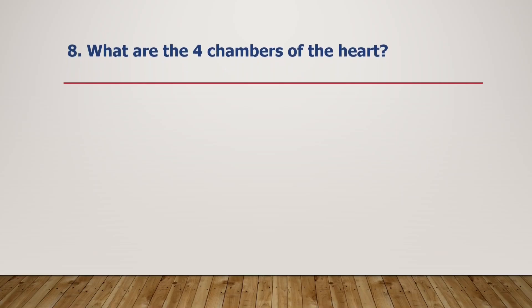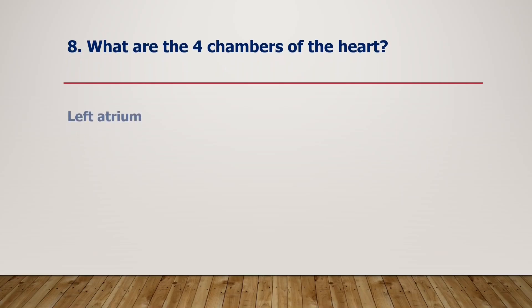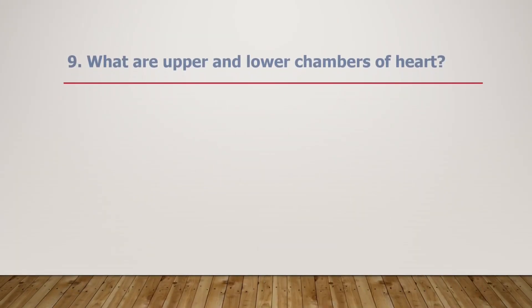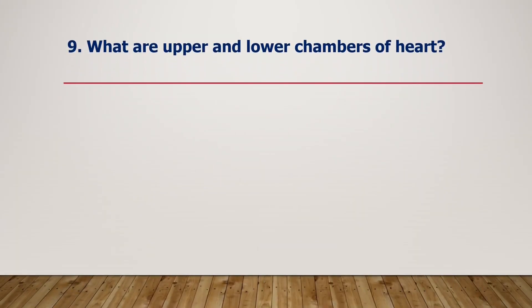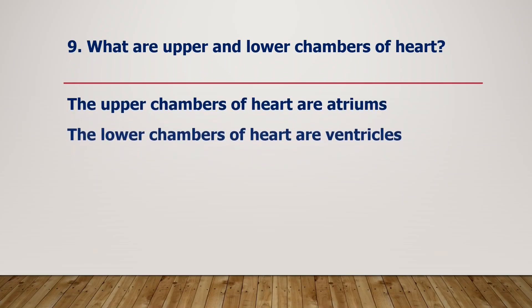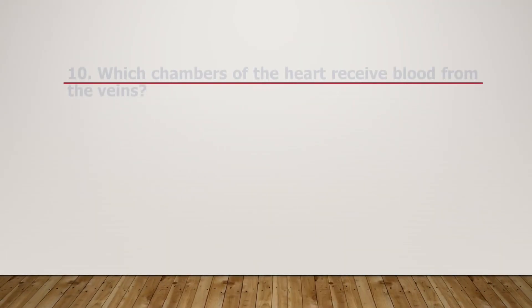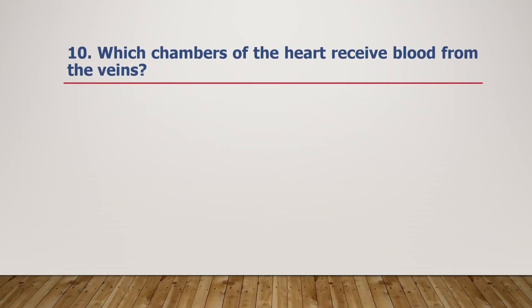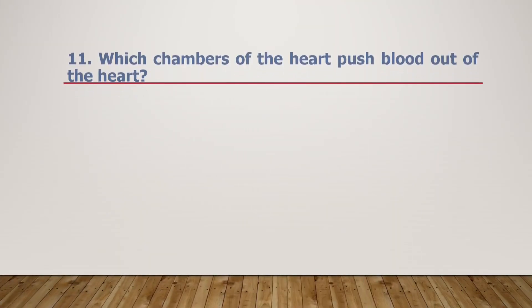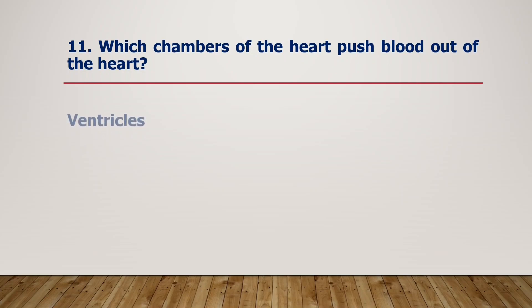What are the four chambers of the heart? Left atrium, right atrium, left ventricle, and right ventricle. The upper chambers of the heart are the atria, and the lower chambers are the ventricles. The upper chambers receive blood from the veins, and the lower chambers push blood out of the heart.